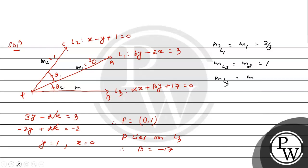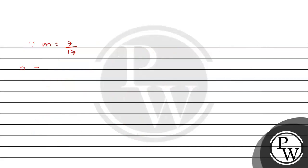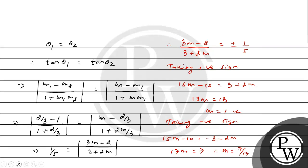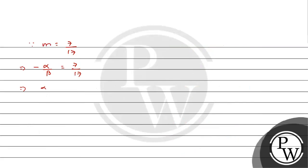So m equal 7 upon 17 and we have m as minus alpha by beta. This is slope of third line: minus alpha upon beta equal 7 upon 17. And we have already found the value of beta that is minus 17. It becomes alpha upon 17 equal 7 upon 17, therefore alpha is 7.